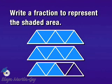Let's write a fraction to represent the shaded area. Now remember, in a fraction, the numerator is the number of parts being considered, or in our case, the number of parts shaded. The denominator is the number of equal parts in the whole.